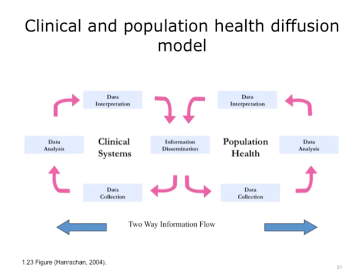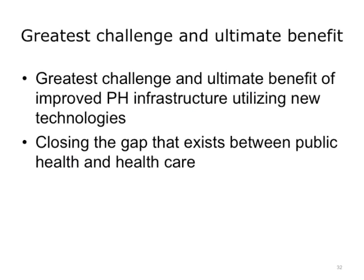This slide shows a two-way flow of information where the information collected at the point of care through clinical information systems and electronic health records can be aggregated and sent to public health. Clinical data collected through electronic health records can be aggregated and used to inform public health about the health status of populations. This two-way reporting — both from public health to clinical care and from clinical care to public health — remains one of the greatest challenges and can provide major benefits to improving public health practice.